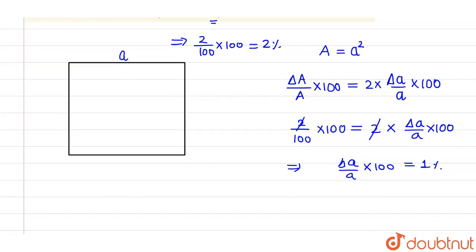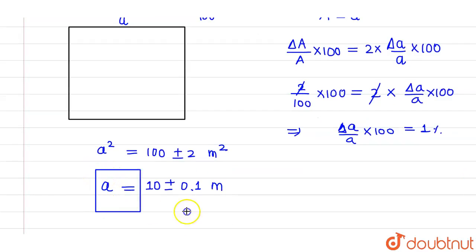Now if A2 is given as 100 plus minus 2 meter square, then A will be equals to 10. And plus minus, since percentage error, maximum percentage error in A is 1% and 1% of 10 is nothing but 0.1. So this will be 10 plus minus 0.1 meter. So this will be the side of that particular square.